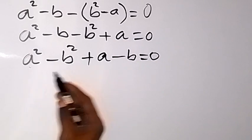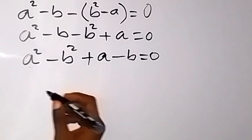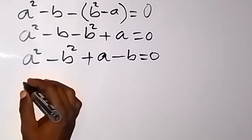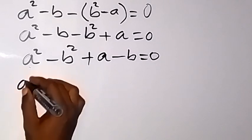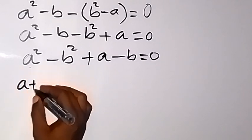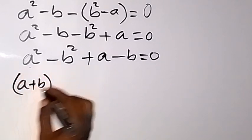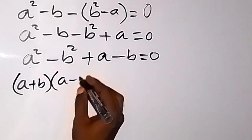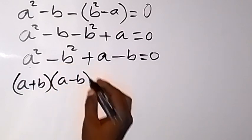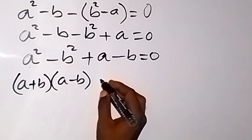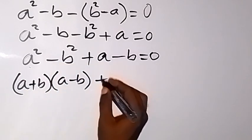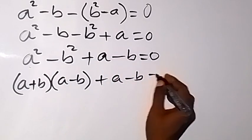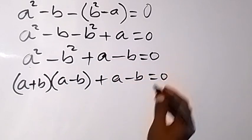From here we have an identity — the difference of two squares — which can be written as a plus b, into bracket a minus b, then plus a minus b, equals 0.